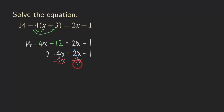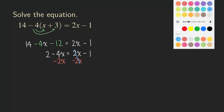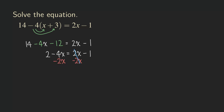So we can cross them out like this. And then we are going to add the negative 4x and the negative 2x together. So we are getting 2 minus 6x.